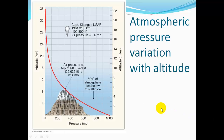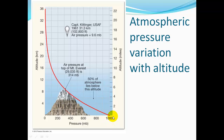Looking at atmospheric pressure variation with altitude: here's altitude in kilometers and miles. Pressure is heaviest closer to sea level. As we go up to, say, the top of Mount Everest, our air pressure would be 314 millibars, which is much less than the 1,000 millibars at sea level.